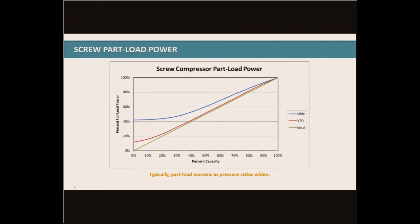Here's a chart showing the difference in efficiency among different types of capacity control. Most screw compressors operating with a slide valve — a pretty standard method — show their percent full load power trending like a hockey stick as capacity decreases toward about 40%. The VFD, by contrast, pretty closely hugs the ideal line down to lower capacities. For example, at 20% capacity, a compressor with a slide valve uses about 42% of its full load power while only delivering 20% capacity. With a VFD at that same point, you're at 20% capacity and about 22% power — roughly half the power to get the same capacity.